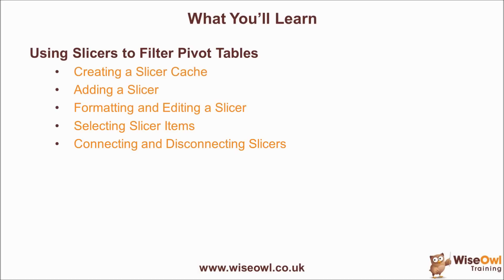The main part of using slicers is about using them to filter a pivot table, and you do that by selecting and deselecting slicer items. So we'll spend a little bit of time investigating a couple of ways to do that. And then the final part of the video is going to explain how you can connect and disconnect slicers from multiple different pivot tables, so you can use one single slicer to control filters from multiple tables.